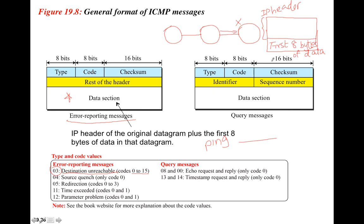The query message format is similar, except it also has a sequence number. For instance, when you use the ping command with an IP address, ping sends a set of packets - not just one - so the sequence number is needed to track them.